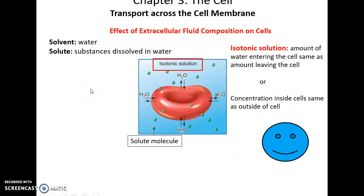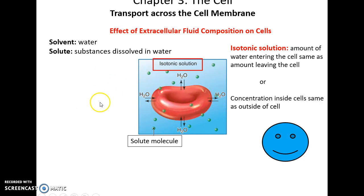When you look at a solution, you see that it is made up of the solvent, water, and solutes — anything that dissolves in the water. The ideal kind of solution for our cells to be in is an isotonic solution. This means the solution outside of the cell has the same amount of materials dissolved in it as the fluid inside of the cell. Because of this, water would be going into and out of the cell at the same rate, so there would be no net change in movement of water.